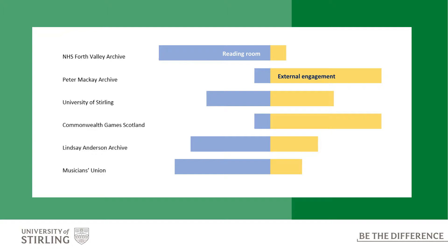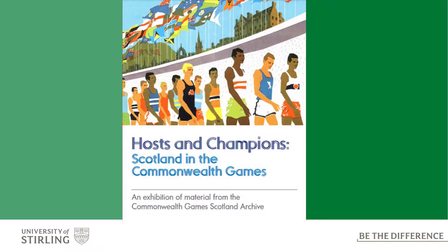We have the Commonwealth Games Scotland archive, which is one of the largest sporting heritage collections in Scotland. It's only been used by a handful of researchers at Stirling; however, it's probably our most seen collection, with thousands of people around Scotland engaging with the archive through our touring exhibition Hosts and Champions Scotland in the Commonwealth Games. This began life as a small pop-up display at the Glasgow 2014 Games, and with the support of Legacy 2014 funding, it's grown into a large touring exhibition which to date has visited 12 towns across Scotland, recently returning from Lerwick in the Shetland Islands, with dates confirmed for 2018 for the Borders and Glasgow.